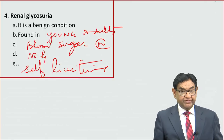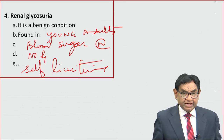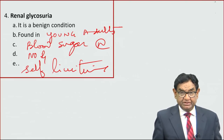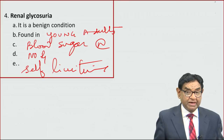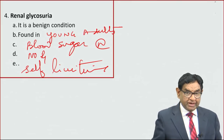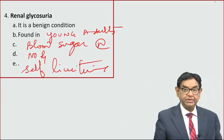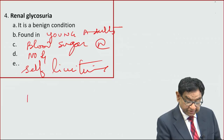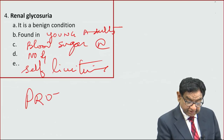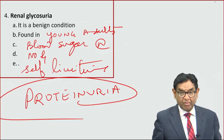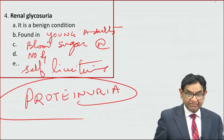Now one more question: tell me any other finding in the urine — especially on routine examination — which can be present in a normal young adult. Stop the video and write down the answer. The answer is proteinuria. Even in a young adult, proteinuria can be a normal finding — nothing to worry about; it is a self-limiting condition.